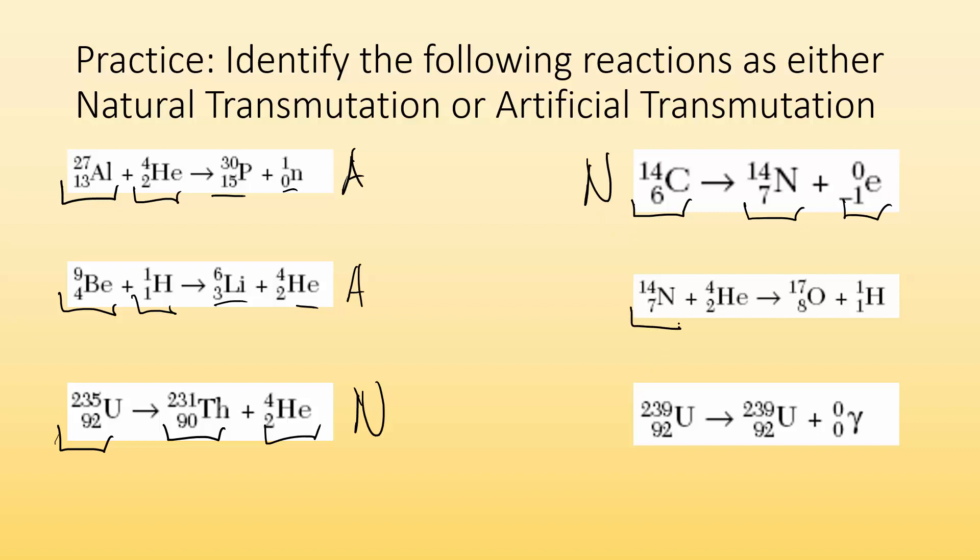Right here, I have two things on my reactant side. I have a nitrogen nuclei and an alpha particle I'm hitting it with, giving me a new element and a particle. That tells me this is artificial. I did that.